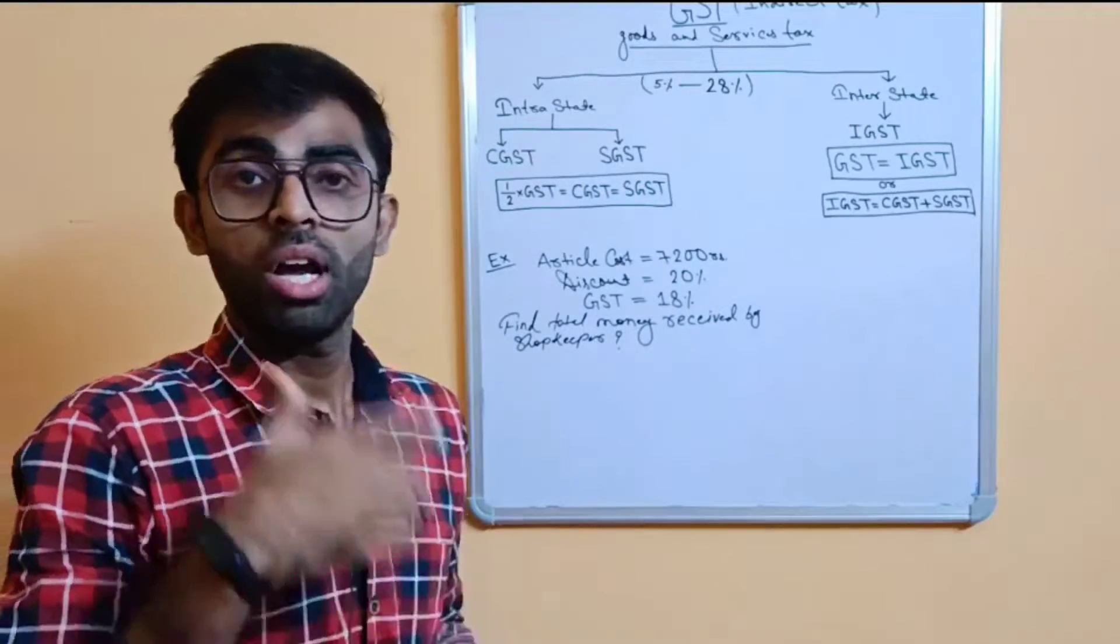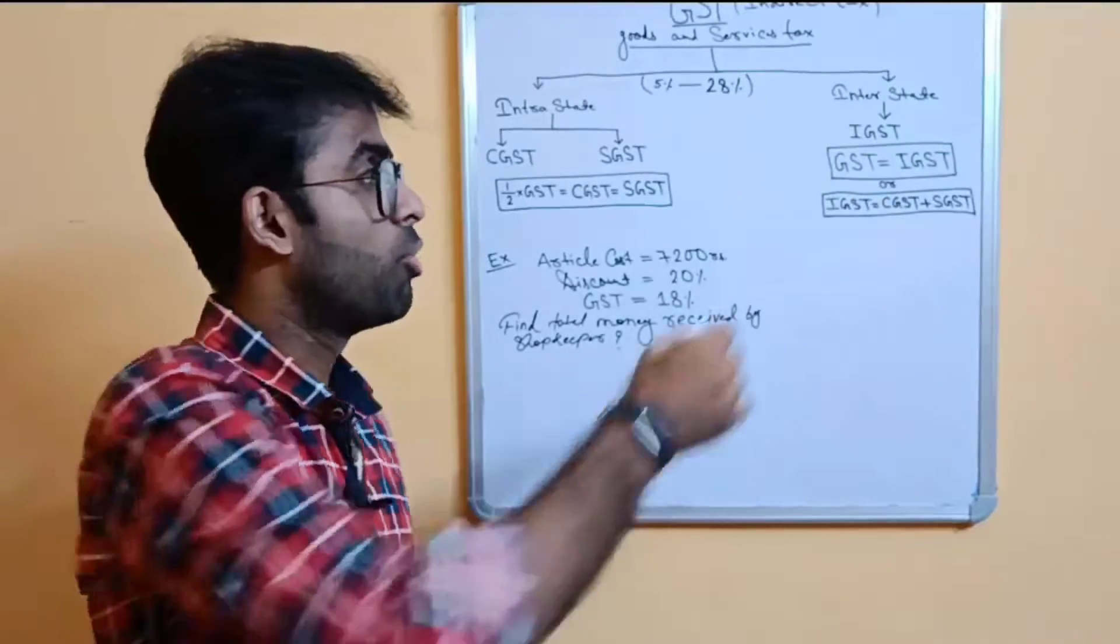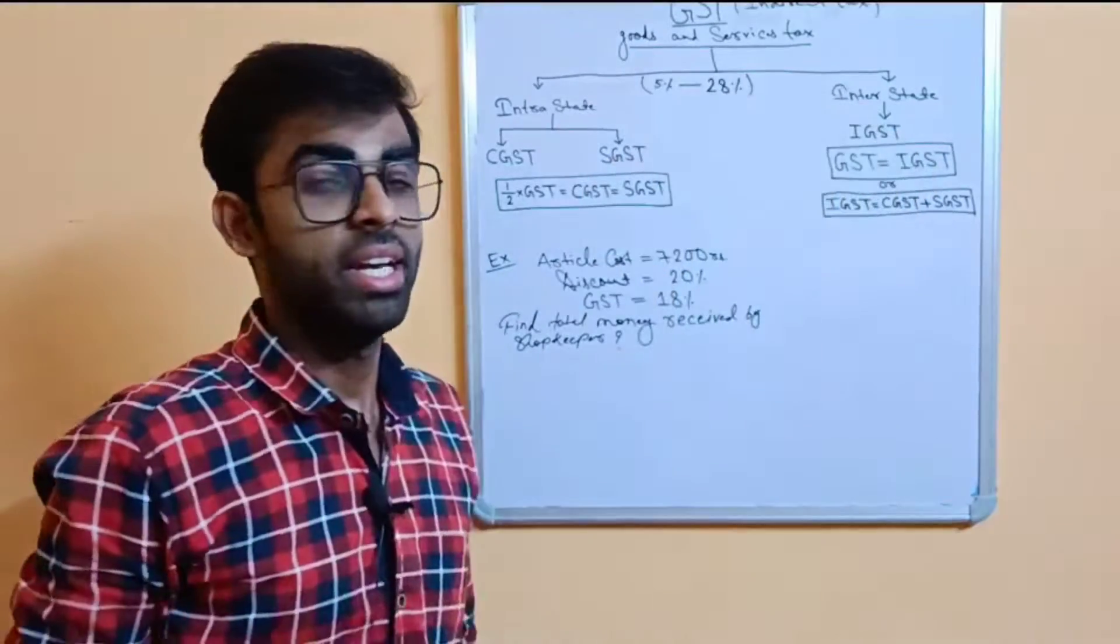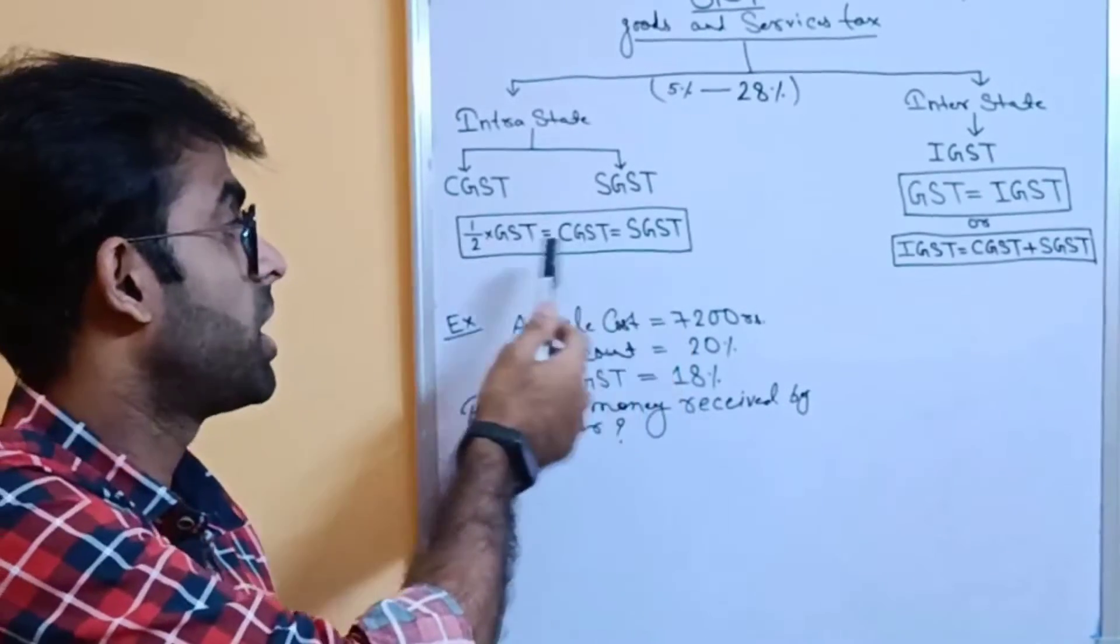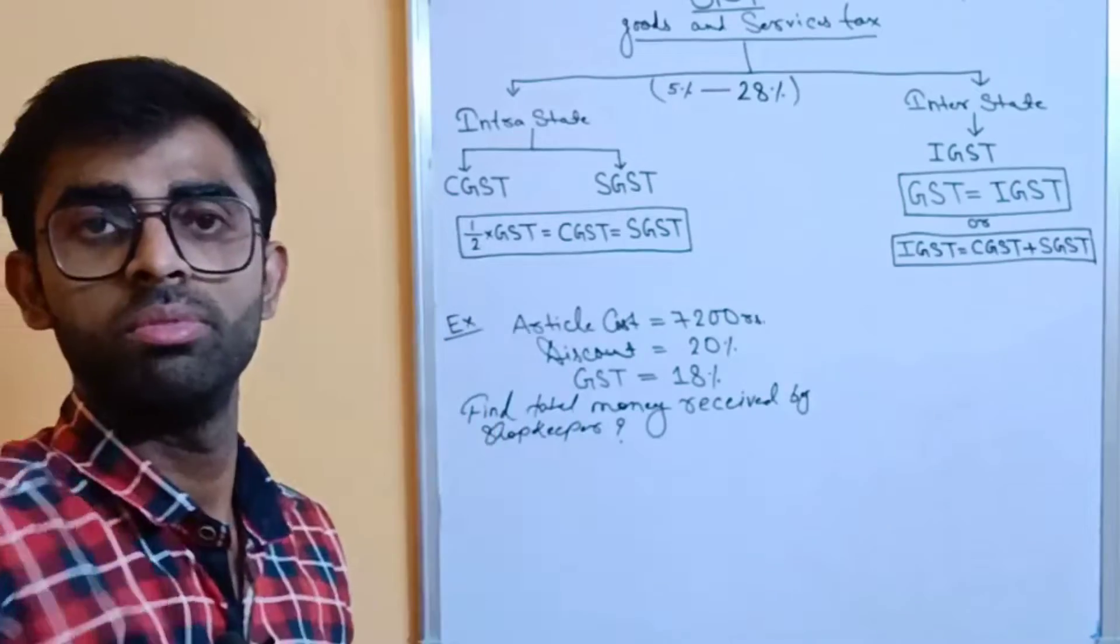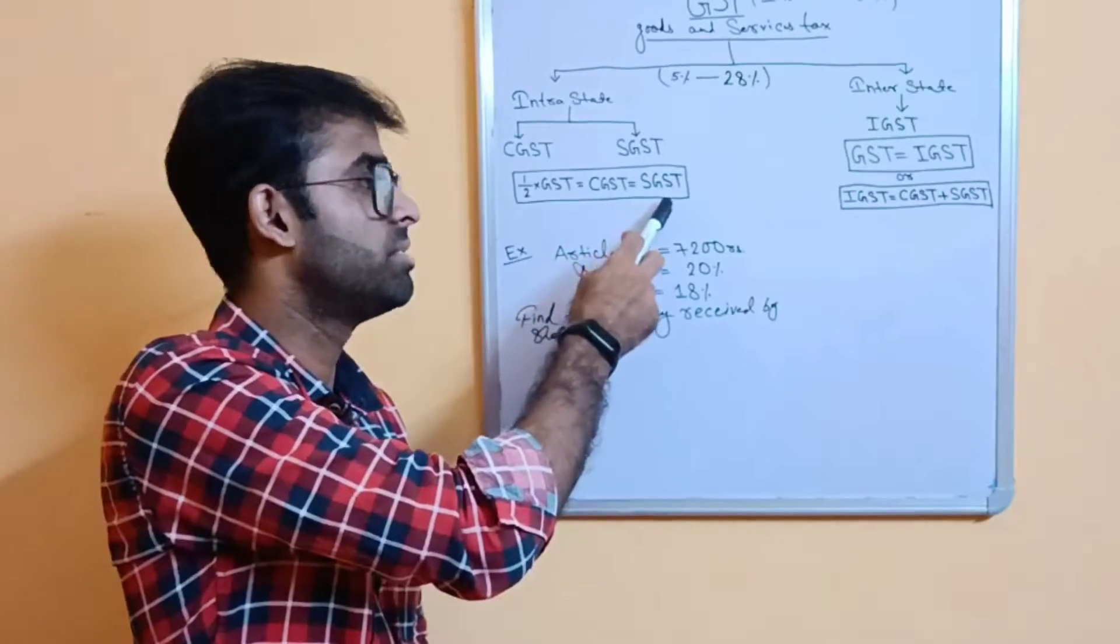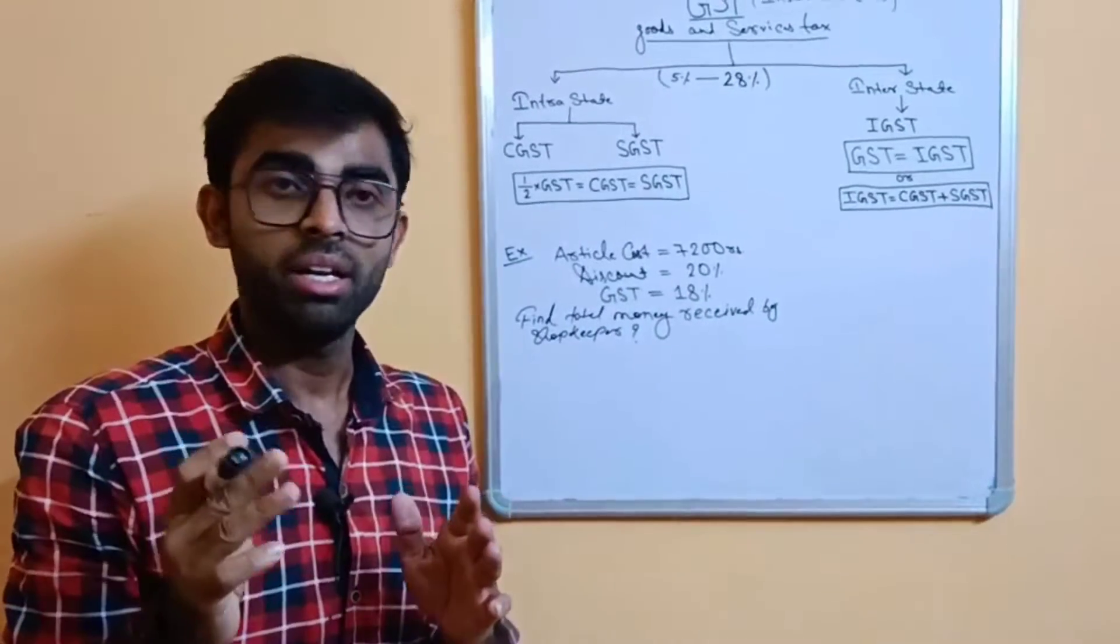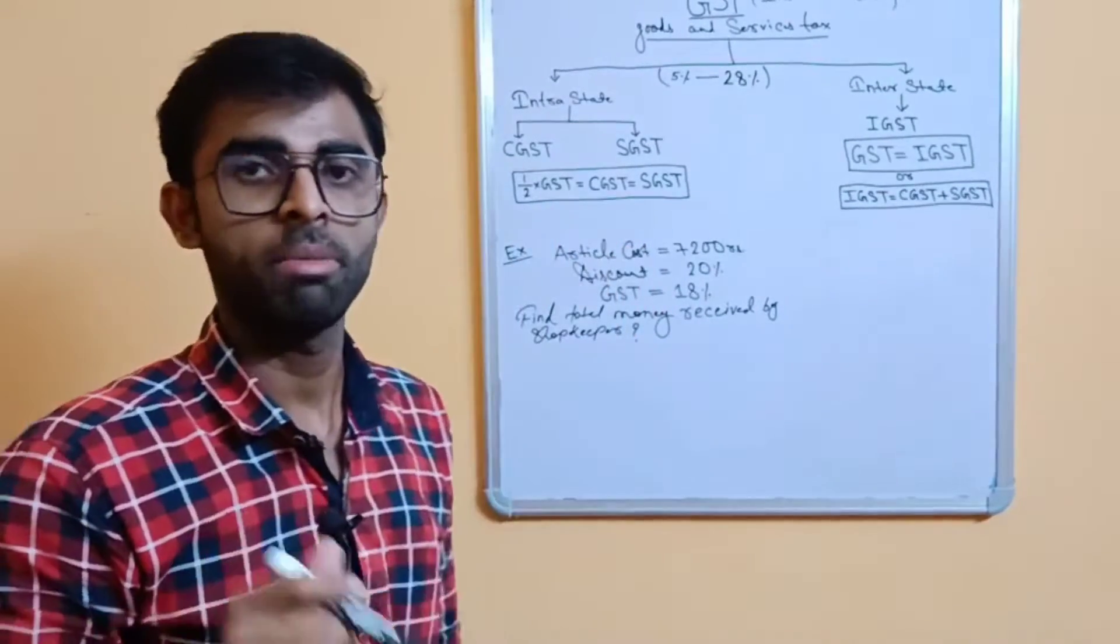And for another state, we can say that IGST. The full form of IGST is integrated GST. CGST and SGST is nothing but 50% of GST. The value of CGST and SGST is divided half of GST. Got my point?